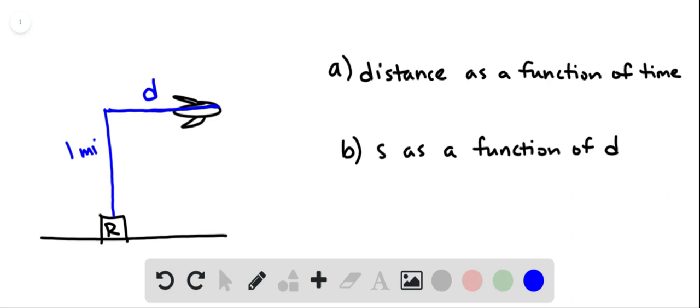We want to find the distance as a function of time, and we're told that the rate or the speed is 350 miles per hour.